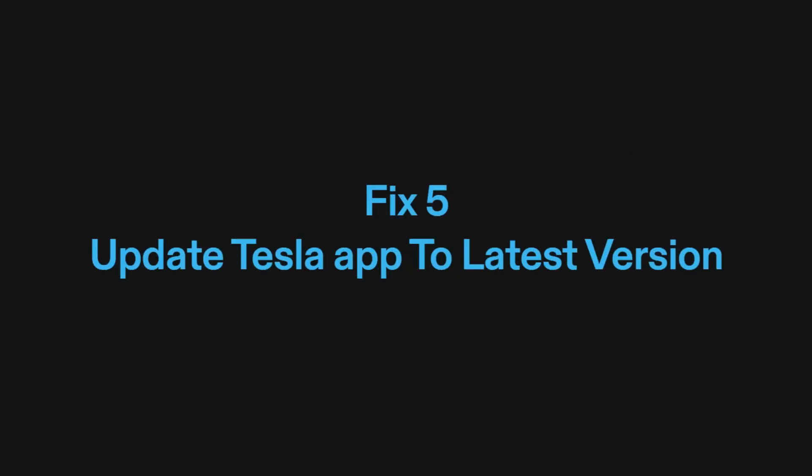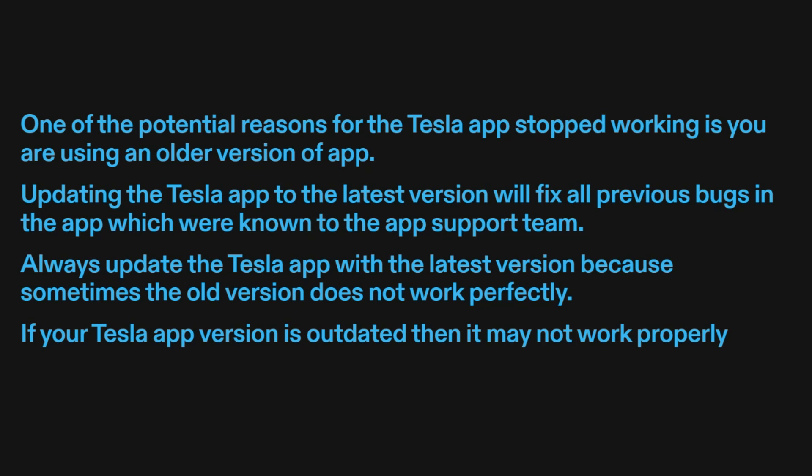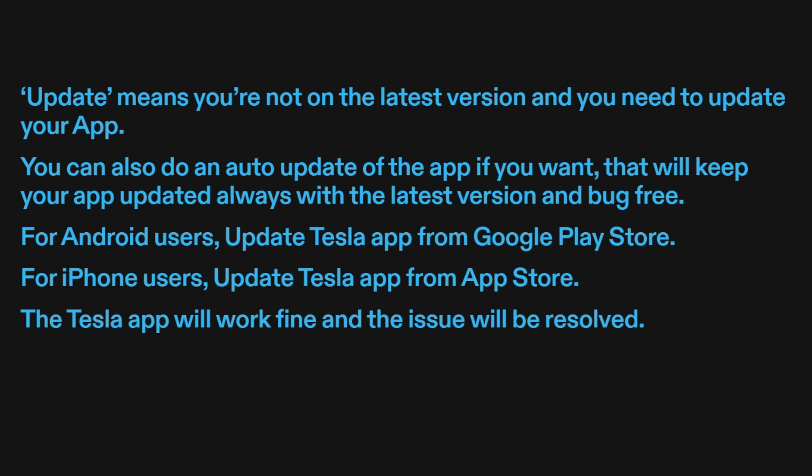Fix five: update the Tesla app to the latest version. One of the potential reasons for the Tesla app stopped working is that you are using an older version. Updating to the latest version will fix all previous bugs known to the app support team. Always update the Tesla app because sometimes the old version does not work perfectly. You can also enable auto-update to keep your app always updated and bug-free.